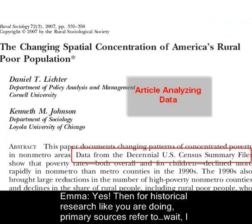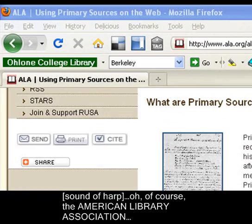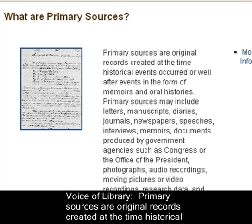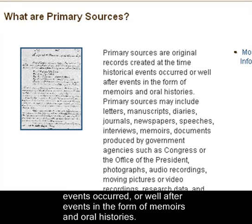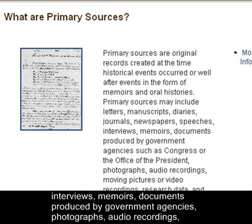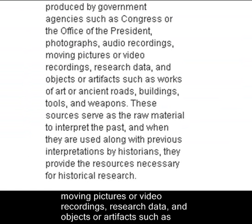Then for historical research like you are doing, primary sources refer to — wait, I remember reading a good definition somewhere. The American Library Association! Primary sources are original records created at the time historical events occurred, or well after events in the form of memoirs and oral histories. Primary sources may include letters, manuscripts, diaries, journals, newspapers, speeches, interviews, memoirs, documents produced by government agencies, photographs, audio recordings, moving pictures or video recordings, research data, and objects or artifacts such as works of art or ancient roads, buildings, tools, and weapons.